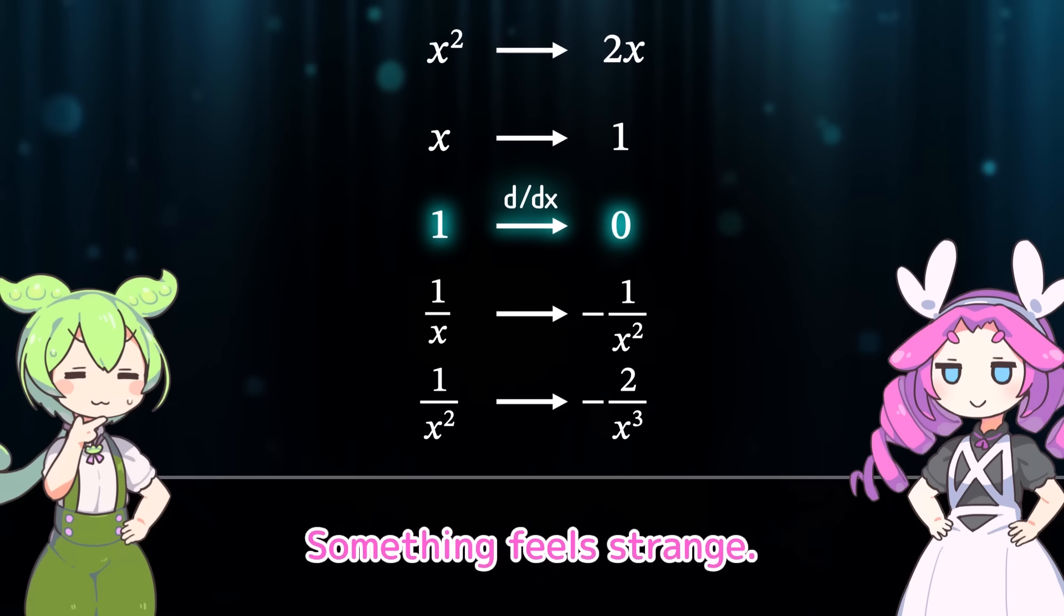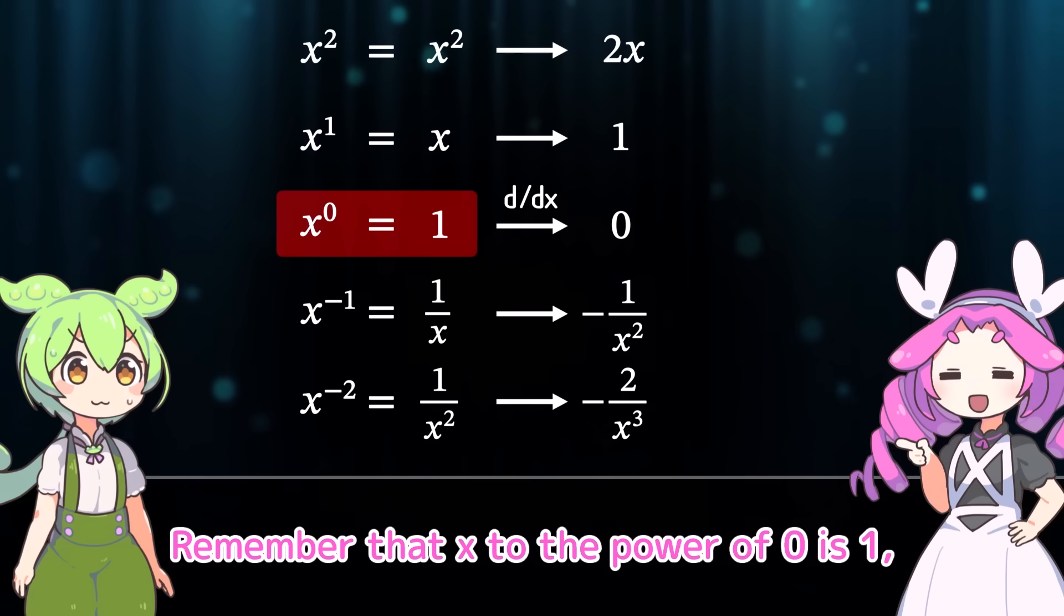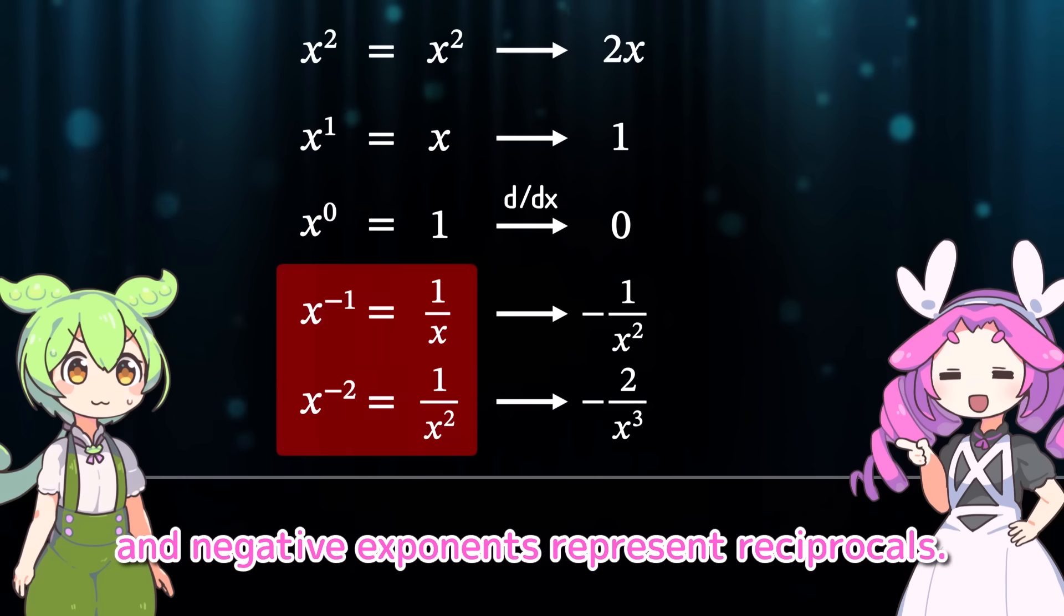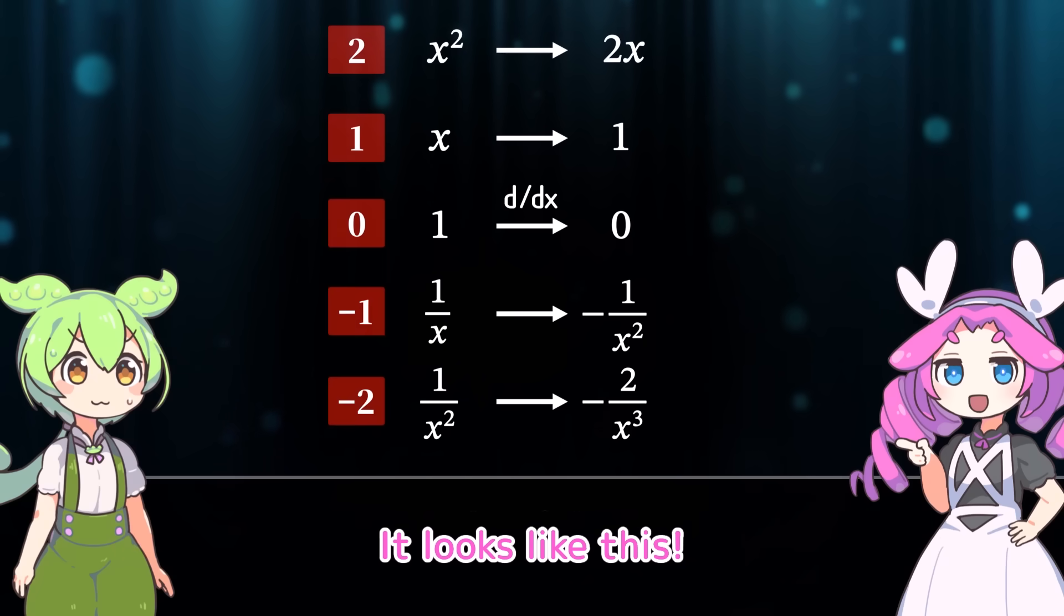Something feels strange. Huh? What do you mean? Let's rewrite the expressions on the left in the form of powers of x. Then it becomes like this. Remember that x to the power of 0 is 1. And negative exponents represent reciprocals. Now, if we extract the exponents from each term, it looks like this.